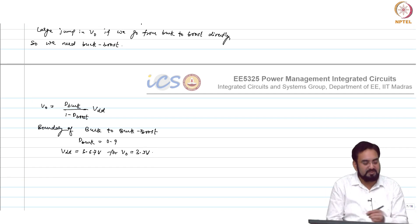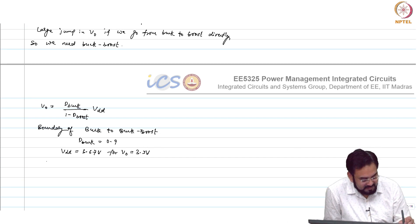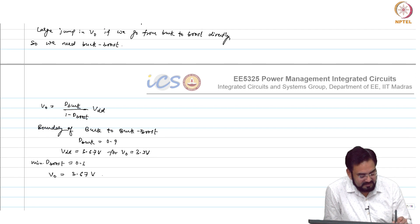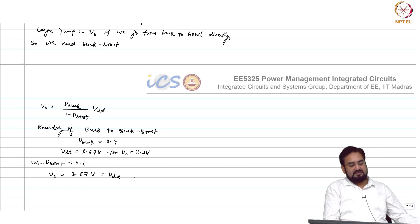When you enter buck boost mode, what will be the d_boost? Is 0.1 correct. What is V_out here? 3 point is same as V_DD. Still your output is changed how much now you have? From 4 volt 3.67.